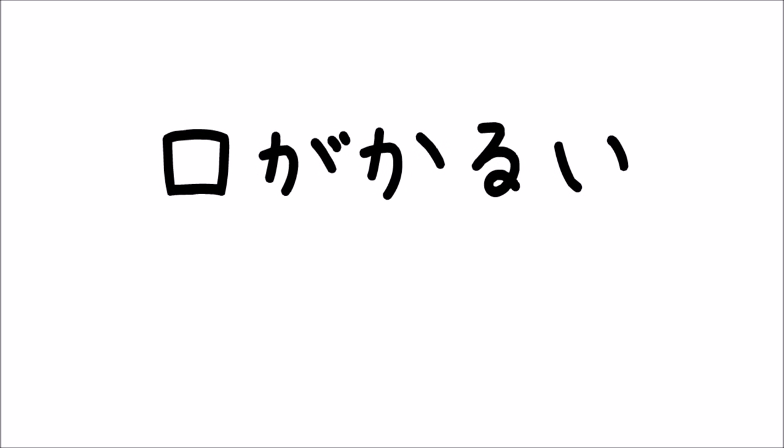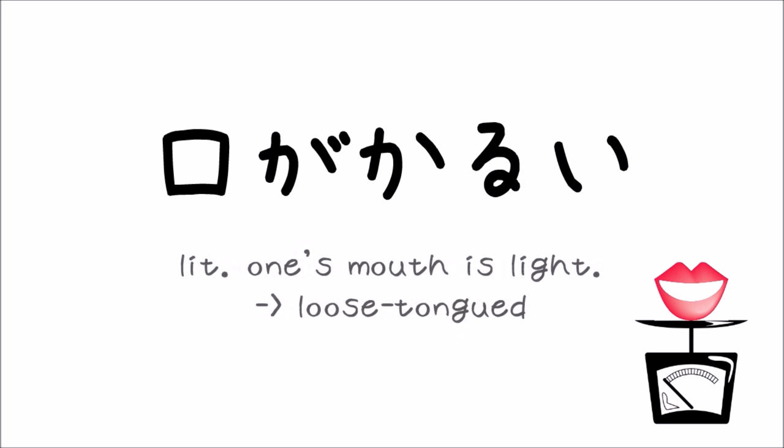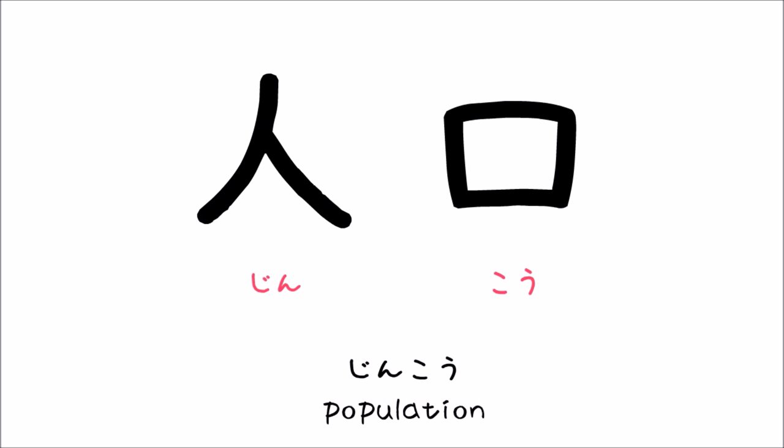I'll show you an interesting expression that uses kuchi. The mouth isn't used as a compound word, so you should use the kunyomi. Ga is the particle that indicates the subject. Karui means light, as in lightweight. Kuchi ga karui means loose tongue — it describes someone who never keeps others' secrets. This is a compound noun so both kanjis have onyomi. The onyomi for person is jin, and the onyomi for mouth is ko. So together it's jinko — it means population.